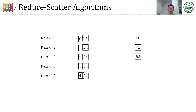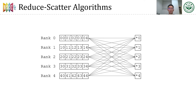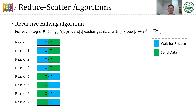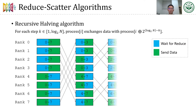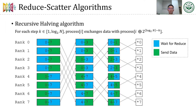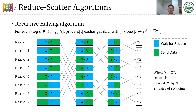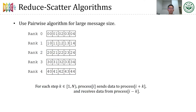Reduce-scatter operation is equivalent to a reduce operation followed by a scatter operation that specifies the number of data distributed on each process. The recursive halving algorithm can be used for reduce-scatter. In each step, each process sends half of its data to the destination shown in the figure, and keeps the rest to wait for a reduce calculation with received data. When the number of processes is not a power of 2, it should be reduced to the nearest power of 2 by having the first several even-numbered processes send their data to their right neighboring processes, with results sent back at the end. When the amount of data is large, we can use the pairwise algorithm, where each process sends proper data to its destination directly.